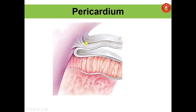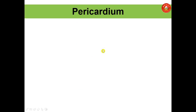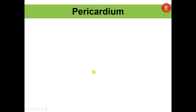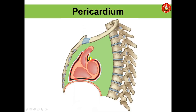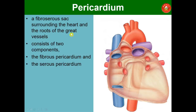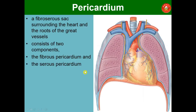The fibrous pericardial layer and inside it the serous layer — serous layer has the parietal outer layer and the visceral inner layer, with the pericardial cavity between them. The pericardium covers not only the heart but also the roots of the great vessels. The fibrous sac around the heart and root of the great vessels consists of two components: the fibrous pericardium and the serous pericardium.